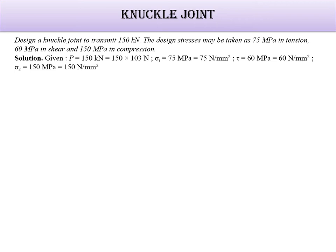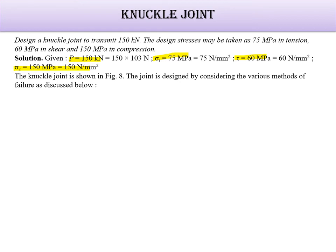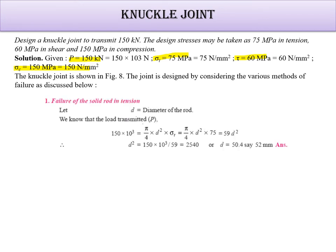So here, the given data. First write out the given data. The load is 150 kN. Sigma T is 75. Tau is 60. Sigma C is 150. Now here, we have already seen the figure. Based on that I am just solving here.